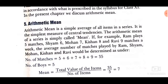Now students, we are moving on to arithmetic mean. Arithmetic mean is a simple average of all items in a series. For example, Ram plays five matches, Shyam six, Mohan seven, Krishna eight, and Ravi nine. So five, six, seven, eight, nine — this set of values is called a series.